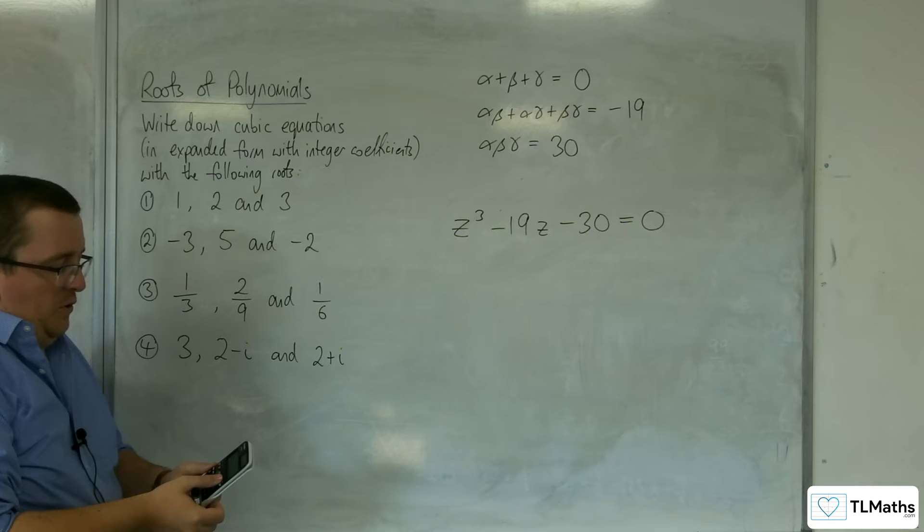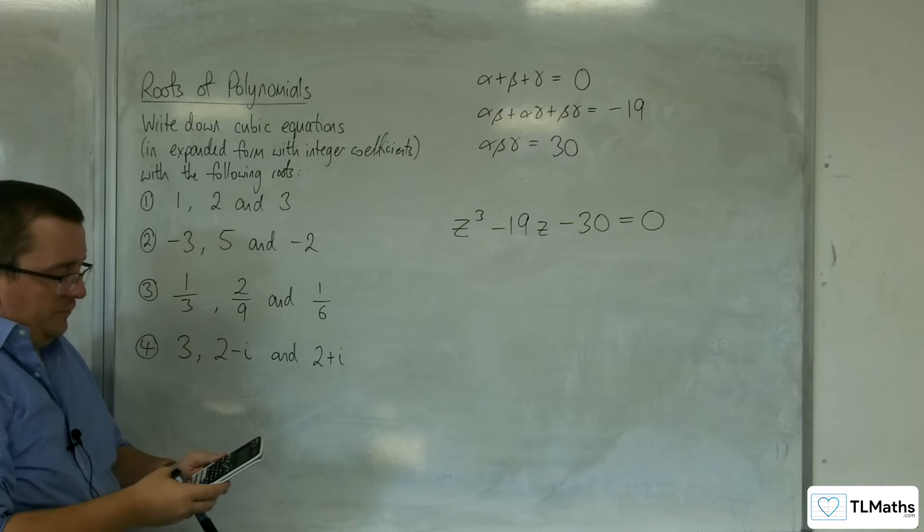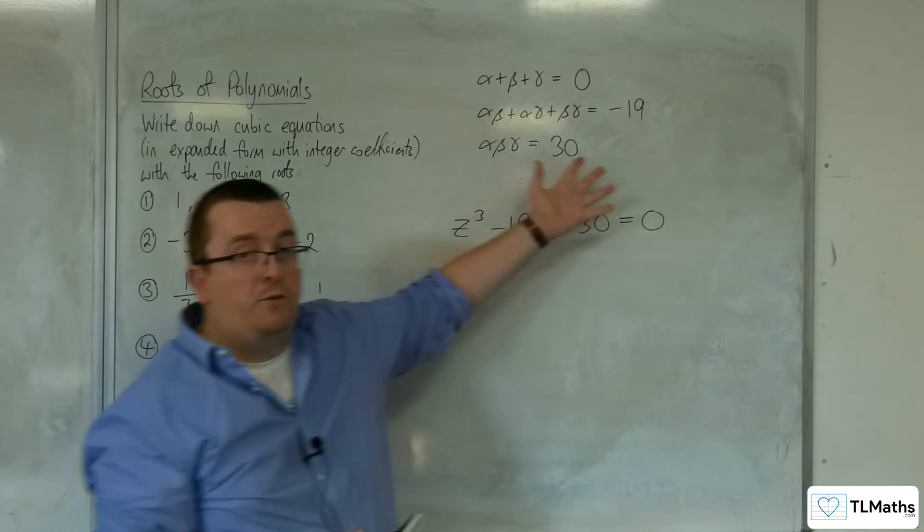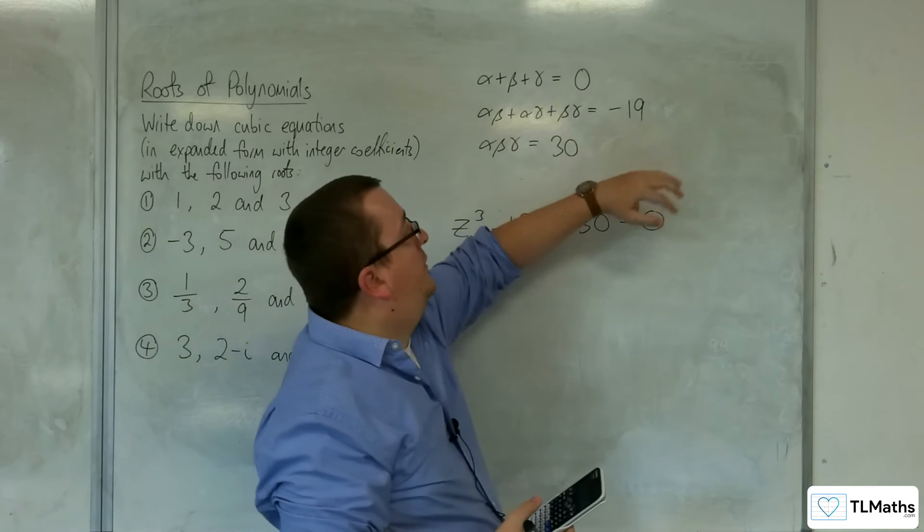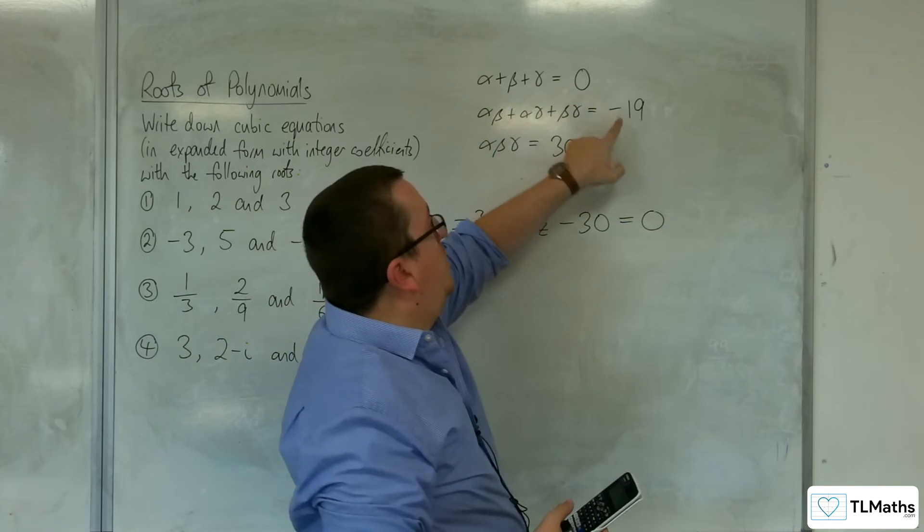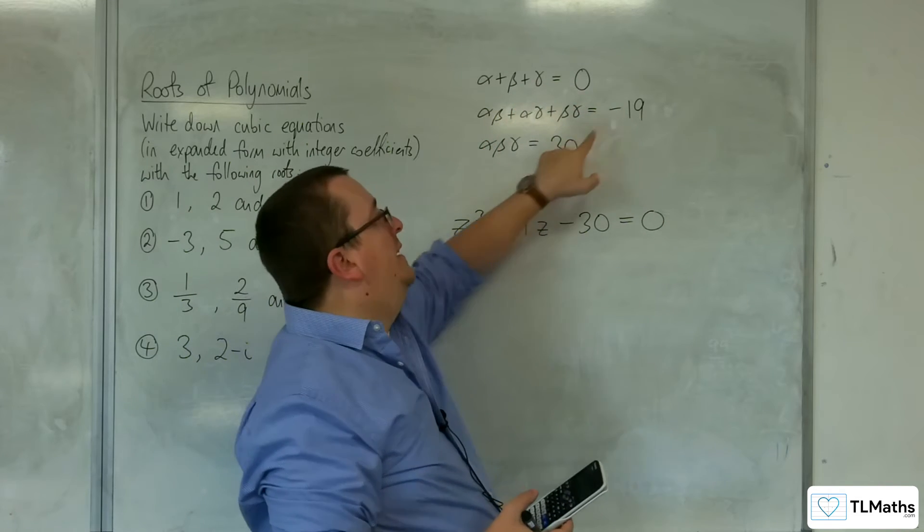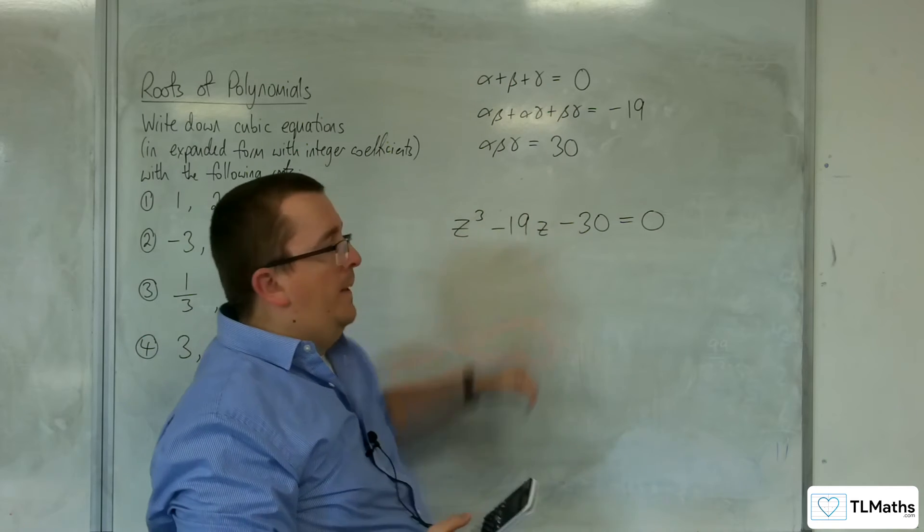So we can pop that into our calculator. I know I was pointing at negative and saying it was positive, but we're just, it's like saying take away 0 plus minus 19, take away 30.